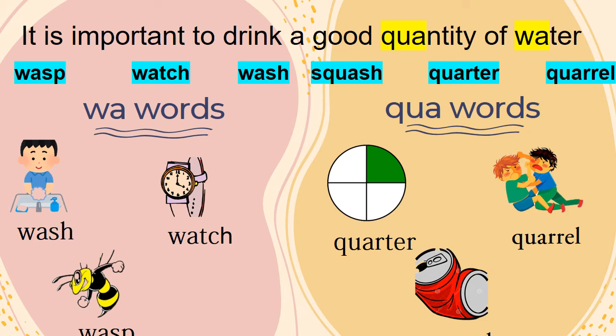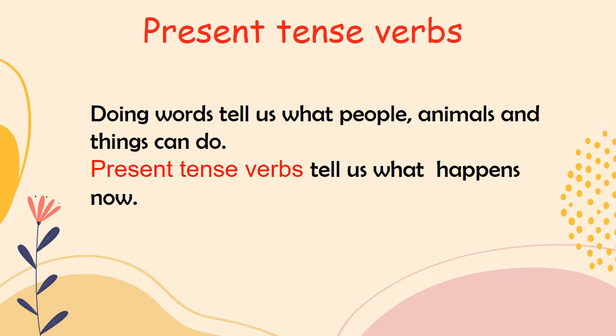Now let's learn about present tense verbs. Have you heard of present tense verbs? They are normal verbs we hear every day, like eat, jump, play, and so on. These are called doing verbs. They tell us what people, animals, and things can do. Remember, present tense verbs tell us what happens now.